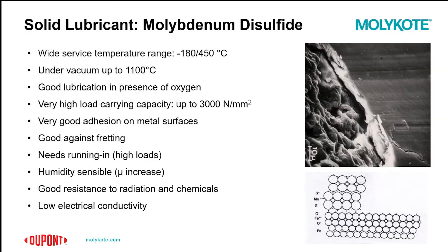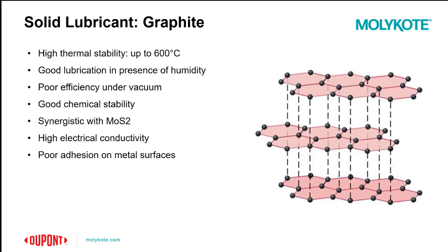One common solid lubricant used in many formulations — and one which Molycote is named after — is molybdenum disulfide. This solid lubricant allows for operation under a very wide temperature range, typically between negative 180 degrees Celsius to 450 degrees Celsius. It is also well-suited for applications that operate under high loads, and provides great corrosion resistance and resistance against harsh chemical environments. Molybdenum disulfide is particularly well-suited for metal interfaces.